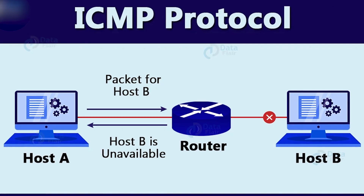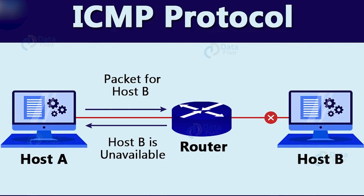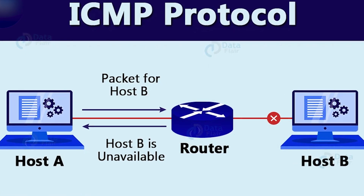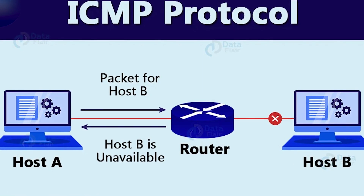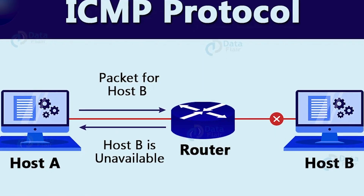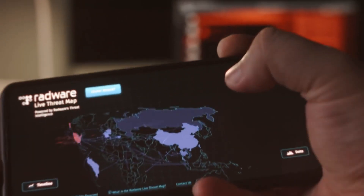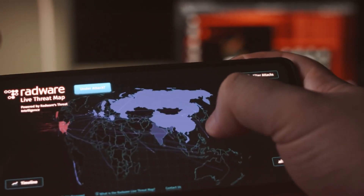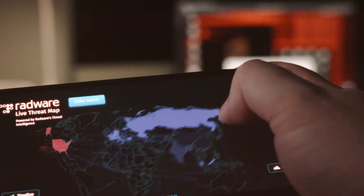ICMP is up next. If you've ever used the ping command, you've used ICMP. It's like sending a quick 'are you there?' to another computer — super handy for diagnostics. But hackers can also use it to map out networks.